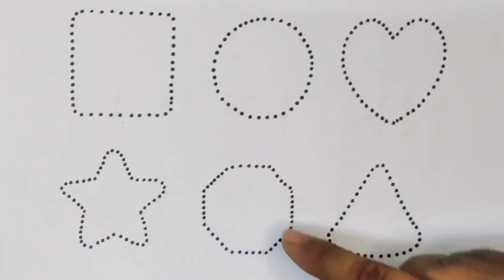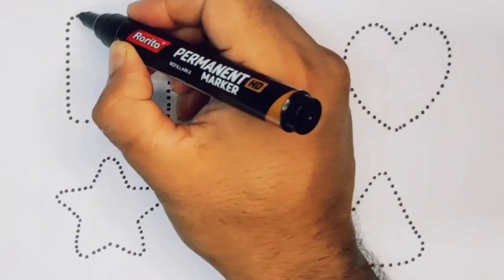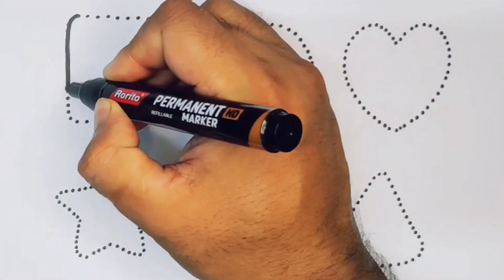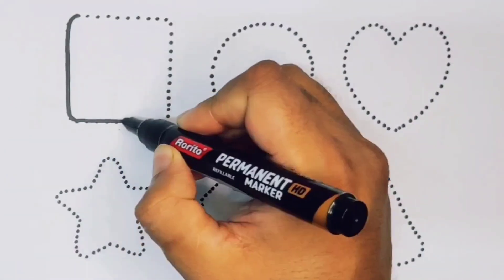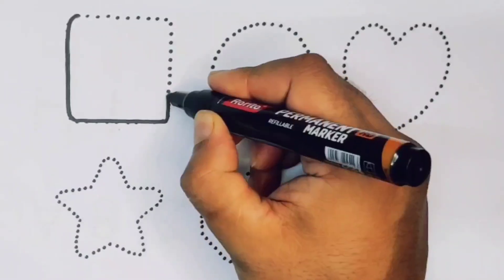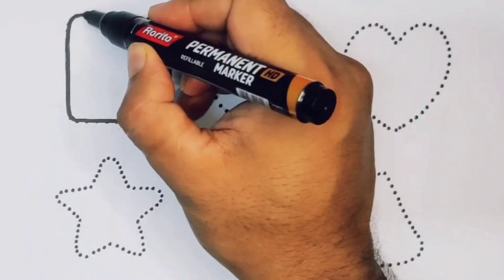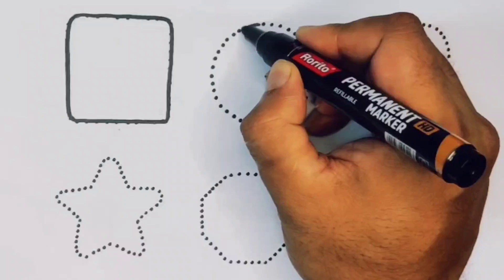Decagon and triangle. First we're going to draw the shapes. Square, next circle.